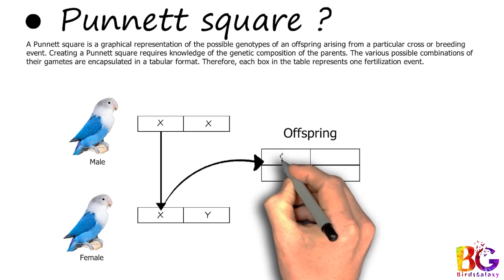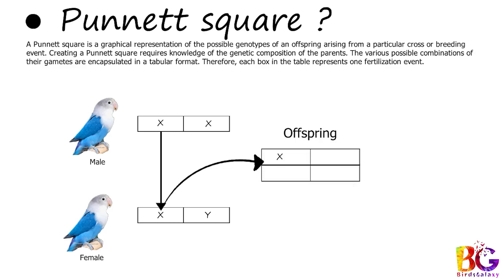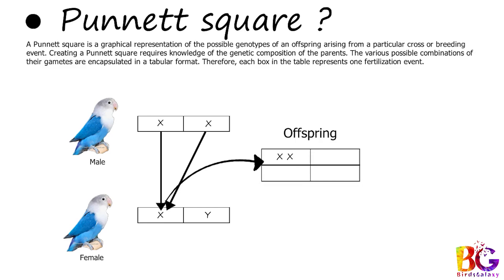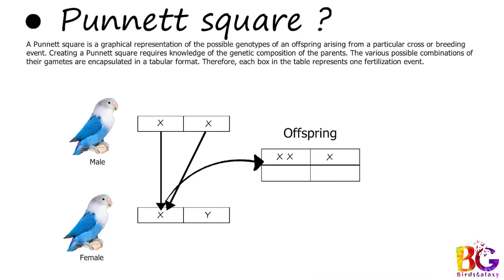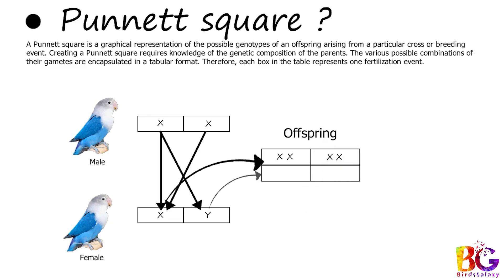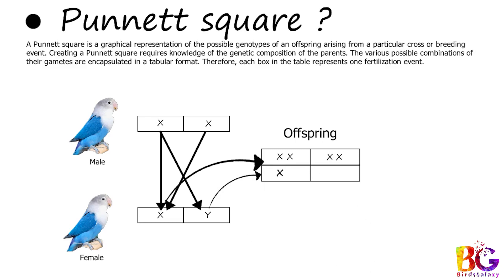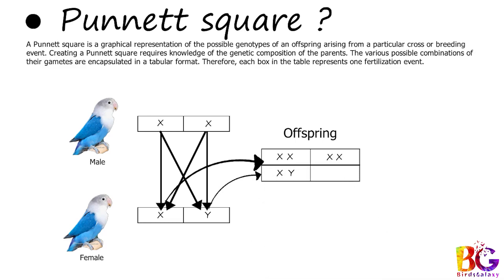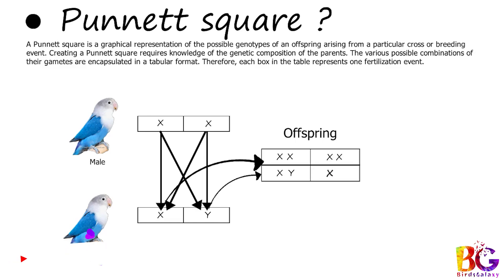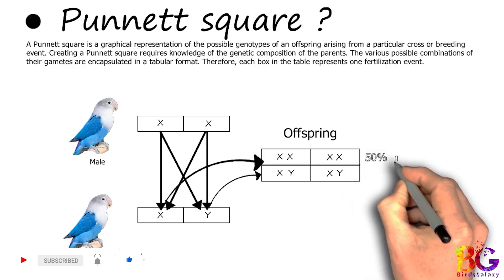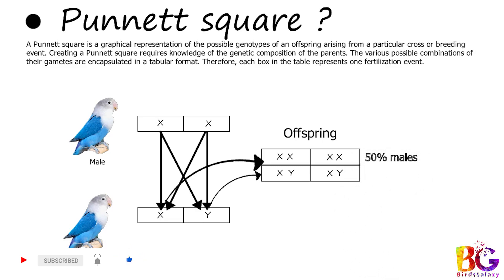The first male chromosome X matches with female X, resulting in double X. The second male X will also match with female's first X, giving the same result: double X. Now match the male's first chromosome X with the female's second chromosome Y — the result will be XY. Match the male's second chromosome X with female's second chromosome Y — result is also XY. So the Punnett table results show 50% males and 50% females.